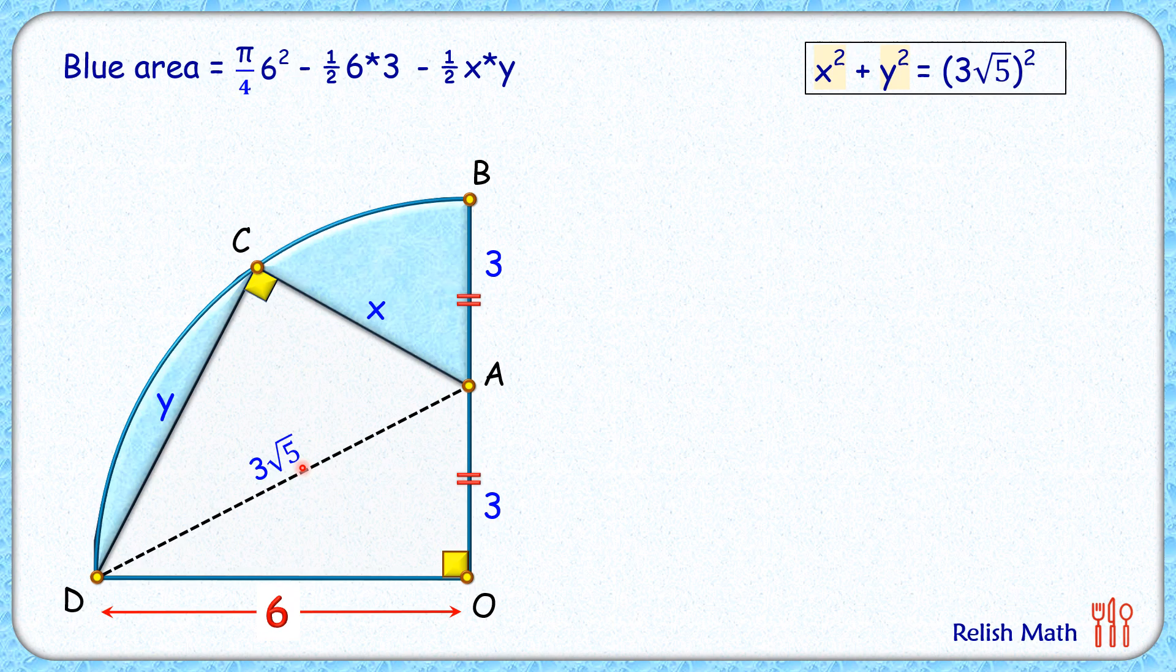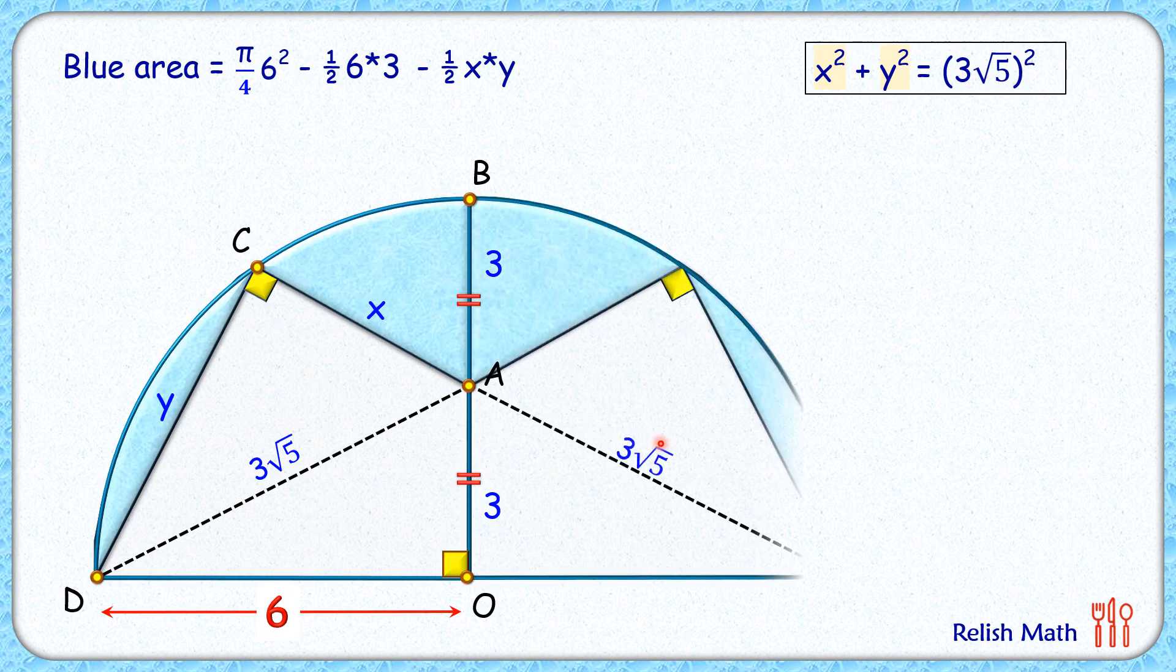And we need one more equation. For that we will have to do some magic. Let's make a mirror image of this figure on the right side. Now here DD dash is nothing but the diameter.